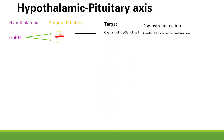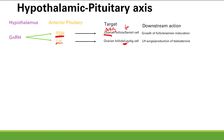LH stimulates the ovarian follicle and is responsible for ovulation — remember, the LH surge causes ovulation. In males, LH stimulates Leydig cells, which produce testosterone. So to remember: LH acts on Leydig cells, and FSH acts on Sertoli cells. GnRH stimulates production of FSH and LH in the anterior pituitary, and these go to the ovaries or testes to cause downstream actions.